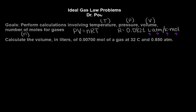So that makes it a little bit easier every single time. Okay, so we are going to calculate the volume, V, in liters of 0.00700 moles of a gas at 32 degrees Celsius and 0.85 atmospheres. So here is our pressure, here is our temperature, here is our number of moles, little n.